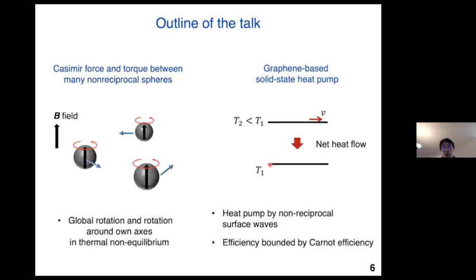In today's talk, I'd like to first discuss the fluctuation-induced force and torque transfer between spheres in a static magnetic field. We showed that a variety of motions can occur in thermal non-equilibrium: global rotation around the center of mass, self-propulsion, and spinning around each sphere's own axis. In the last part of my talk, we also discuss our recent effort to propose a heat pump that converts the kinetic energy of carriers inside a material, such as electrons, into radiative heat that flows from a cold object to a hot source, thereby achieving heat pumping.